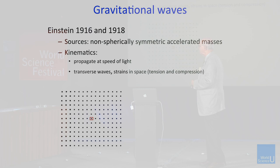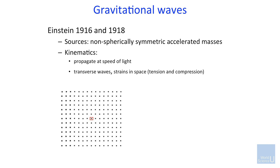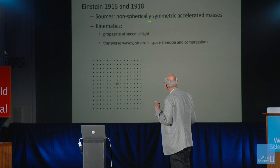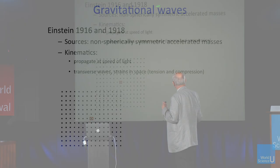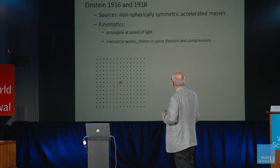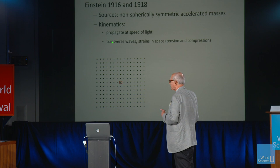In 1916, Einstein wrote his first paper on gravitational waves — a year later than the big discovery of the field equations. In 1918, he wrote another paper where he corrected his errors. The most important thing is that in 1916 he described that the sources of the waves would be accelerated masses. It turns out it's only the non-spherical part of the motion that makes gravitational waves — in his initial paper he didn't distinguish those. But he described completely properly that they will propagate at the speed of light, these waves, and they are transverse waves. They are strains in space — both tension and compression.